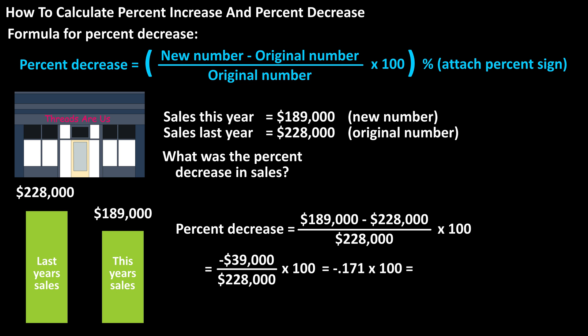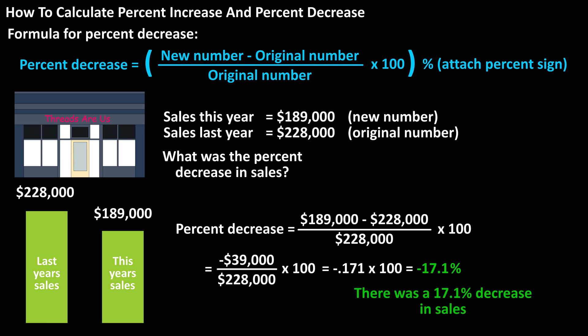Next, we multiply negative 0.171 times 100, which gives us negative 17.1. Then we attach a percent sign to get a final answer of negative 17.1% as the percent decrease in sales. When describing this, we drop the negative sign and say there was a 17.1% decrease in sales.